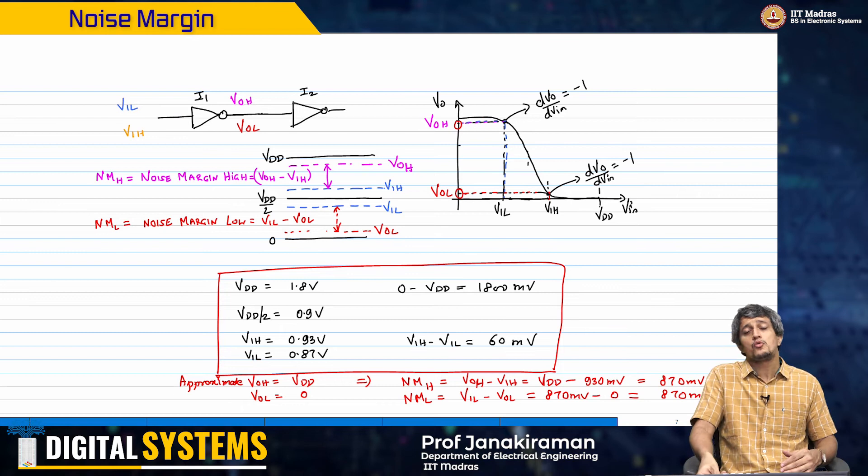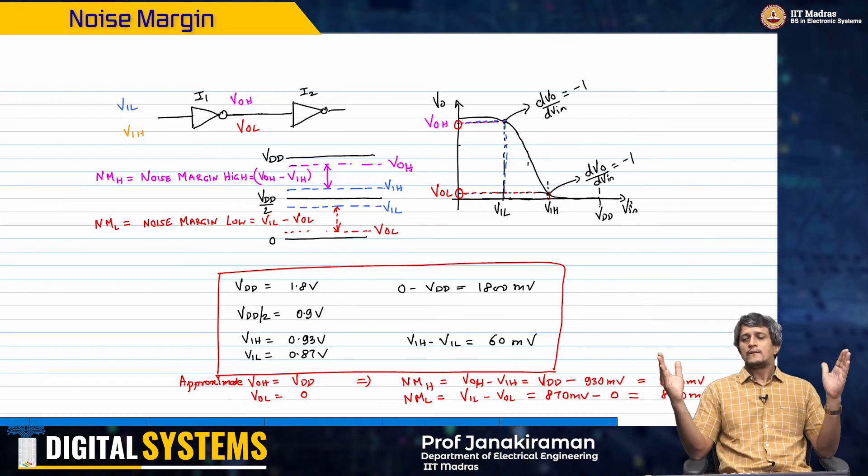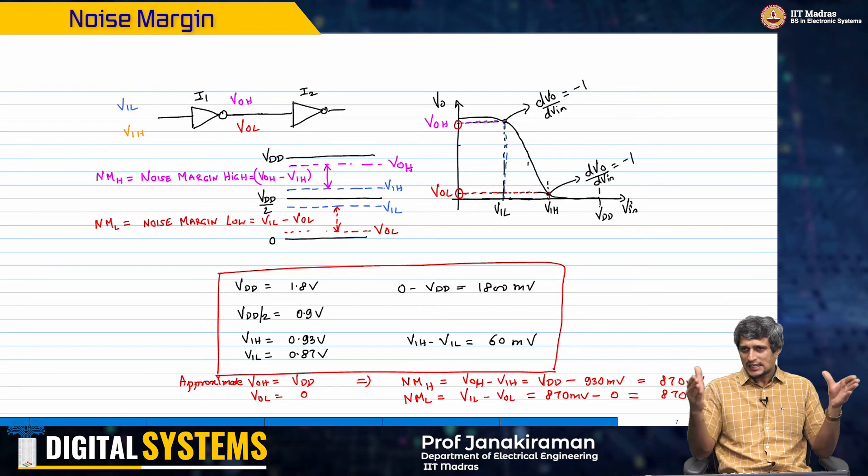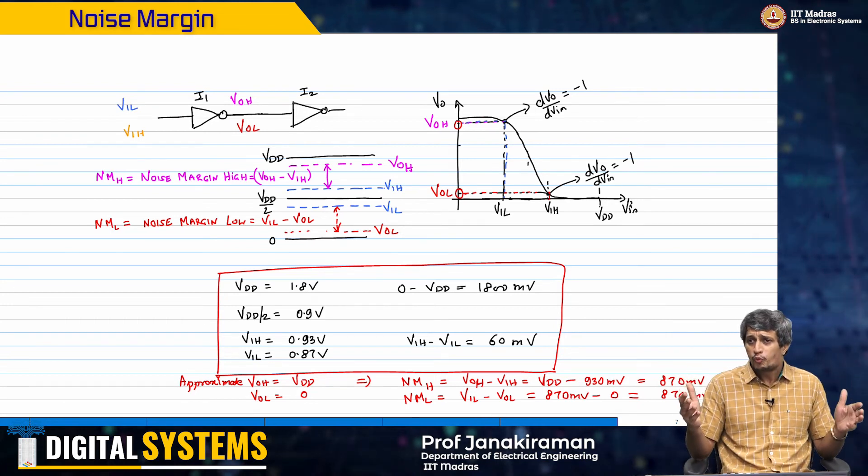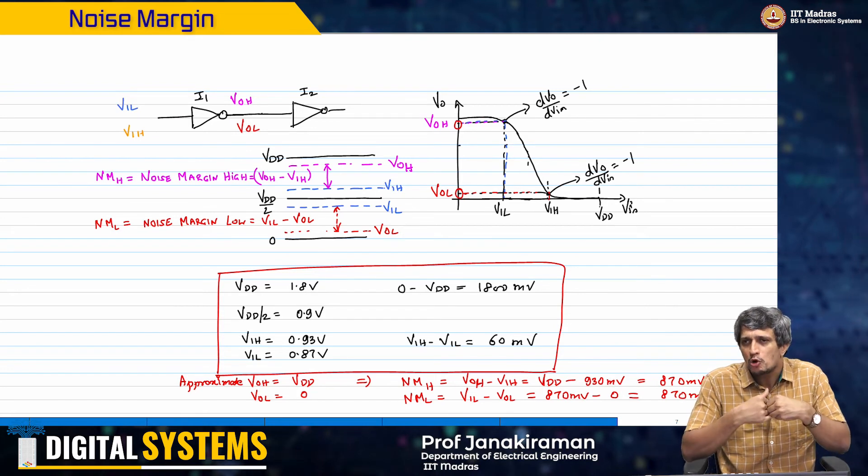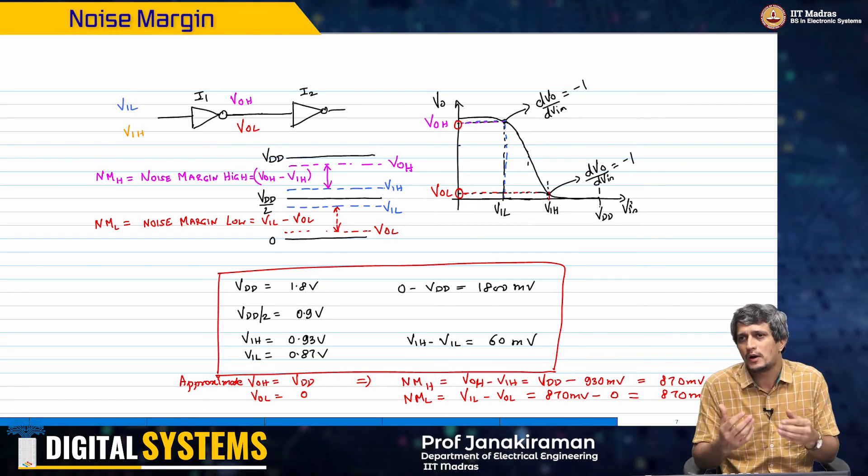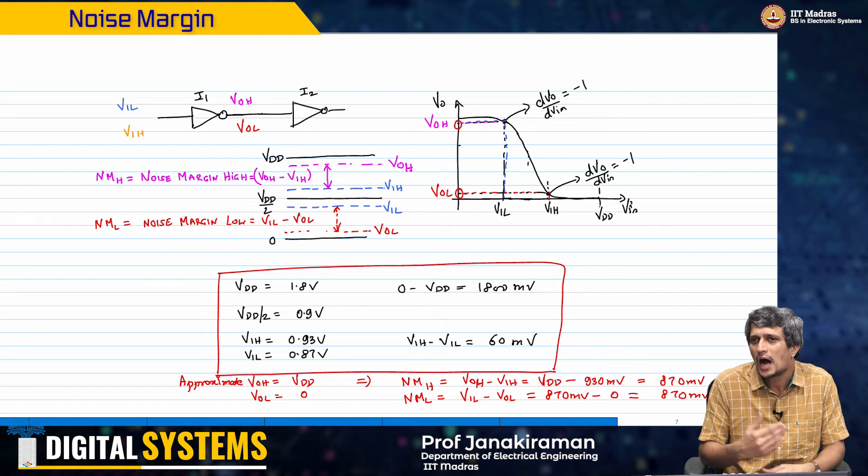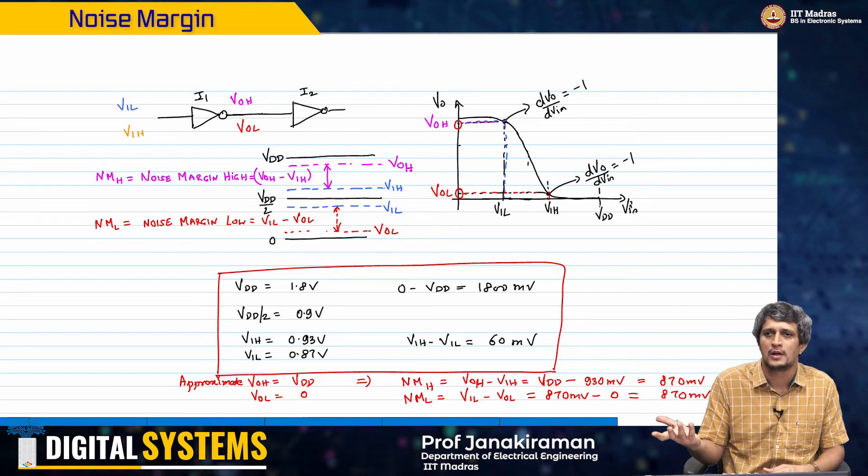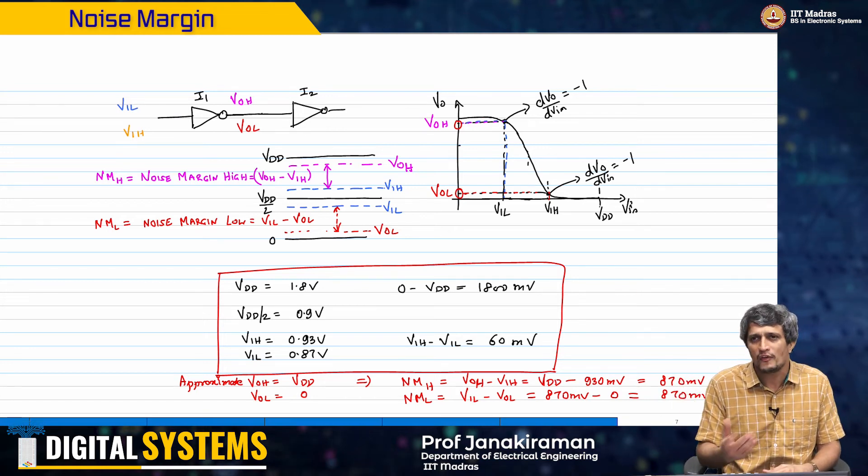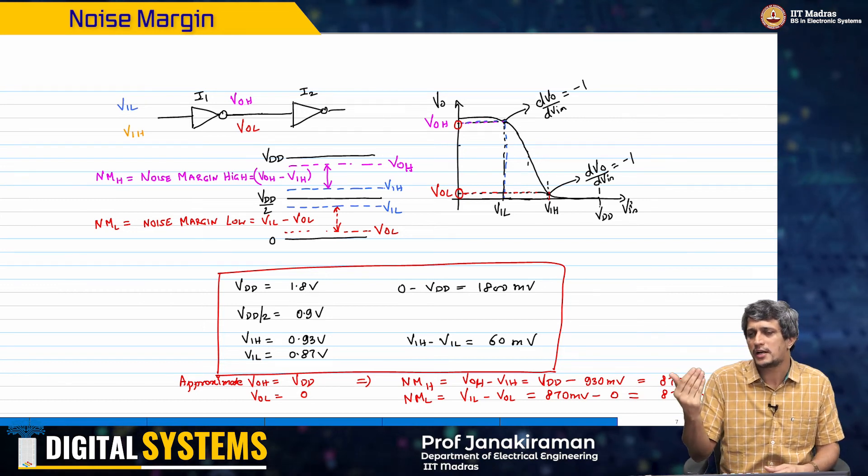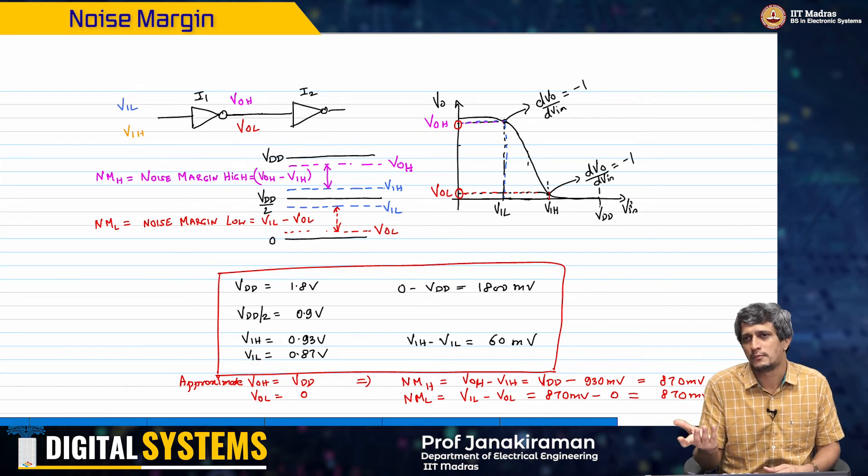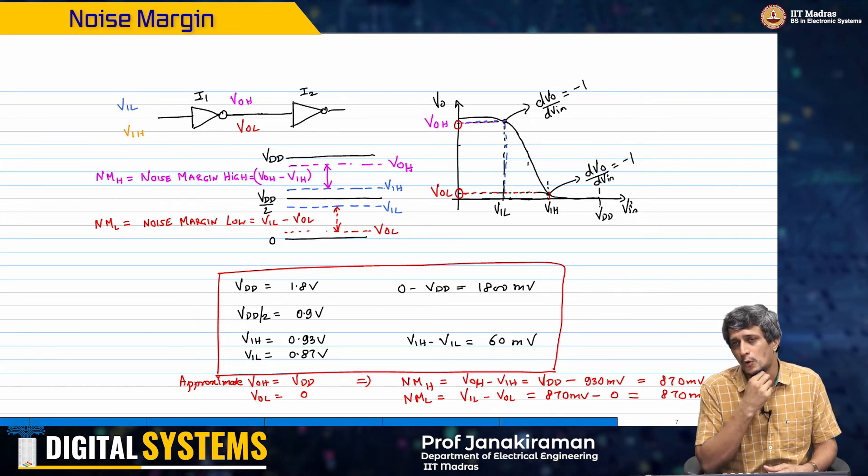You actually have 870 millivolts of noise margin available for the digital circuit to work absolutely perfectly. 870 millivolts is nearly half the supply voltage, and therefore there is no way that the digital circuit is likely to malfunction because of noise.